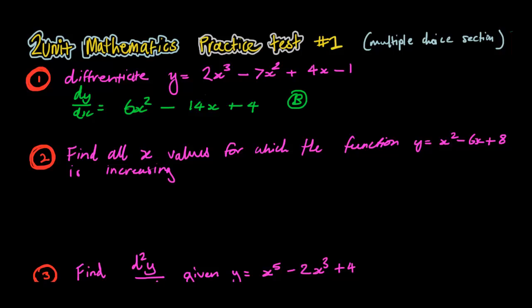Okay, moving on. Find all x values for which the function y = x² - 6x + 8 is increasing. So the first thing in this is, when it says increasing, we know how to find this. And that is through basically differentiating this and making this function bigger than 0. So let's do this.